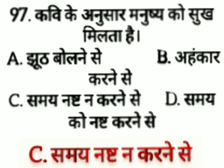Kavi ke anusar manish ko sukh milta hai — option A: jhoot bolne se, option B: ahankar karne se, option C: samai nash na karne se, option D: samai nash karne se. The answer is option C, samai nash na karne se.